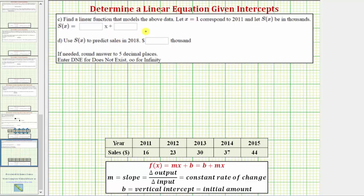In part C, we're asked to find a linear function that models the above data, in this case the data below. And we're told to let x equal one correspond to the year 2011, and let S(x) be in thousands of dollars. Let's first write the corresponding values of x above the years. So if we include a row for x, x equals one represents 2011, x equals two represents 2012, and so on.